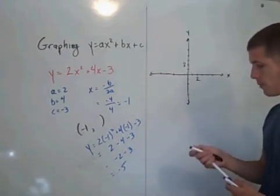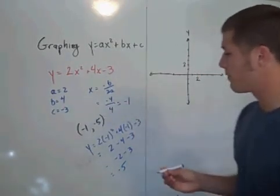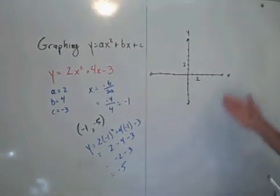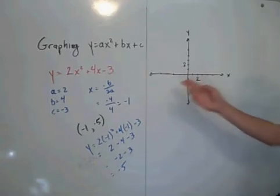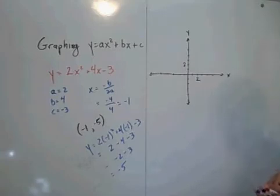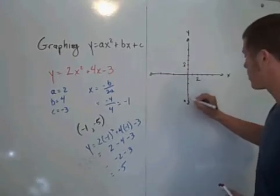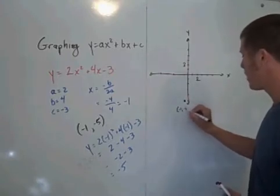So our vertex is the point negative 1, negative 5. And we'll come over to our axis here. I have an x-axis and a y-axis. I have a scale label. So we can plot the vertex. The vertex is at the point negative 1, negative 5. It's right here.